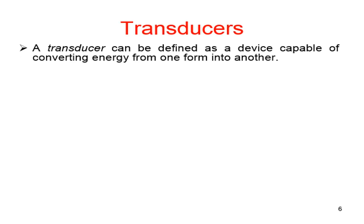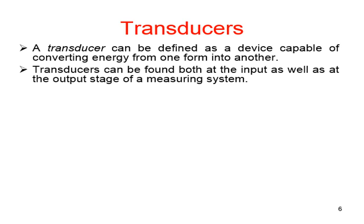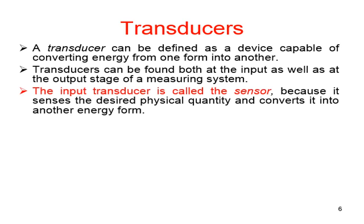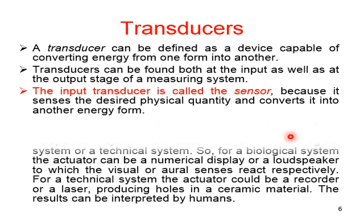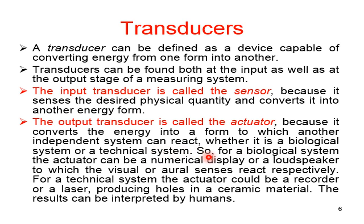A transducer can be defined as a device capable of converting energy from one form into another. Sensor and transducer almost mean the same thing. A transducer can be found at both the input and output stages of a measuring system. The input transducer is also called a sensor, because it senses the desired physical quantity and converts it into the required energy form. The output transducer is called an actuator.